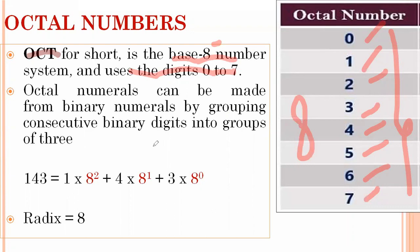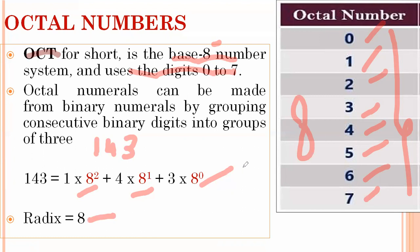Octal numbers can be formed from binary numerals by grouping consecutive binary digits into groups of three. For example, the octal number 143 is represented as 3 × 8⁰ + 4 × 8¹ + 1 × 8². This shows that the base is 8, meaning the total number of symbols used in the octal number system is eight.